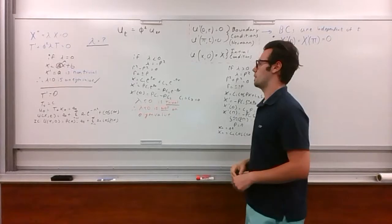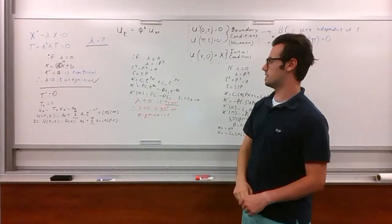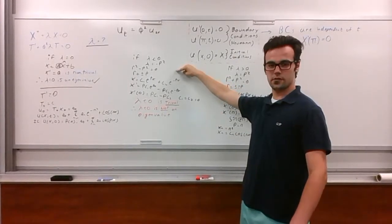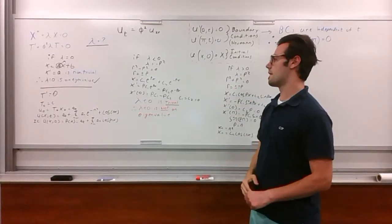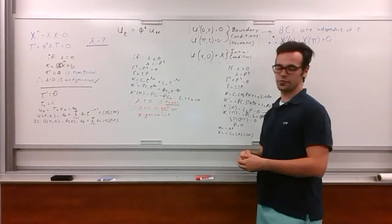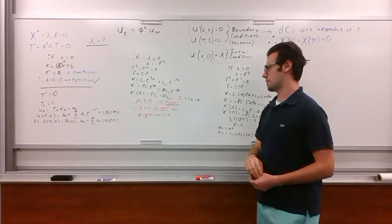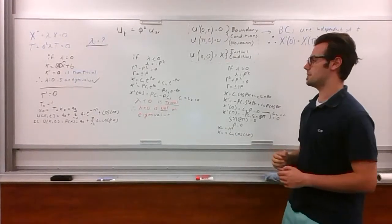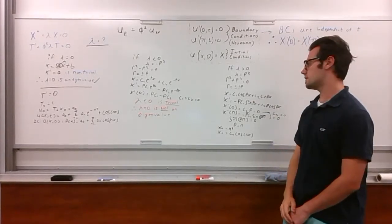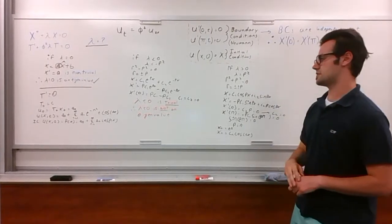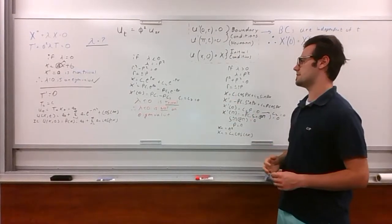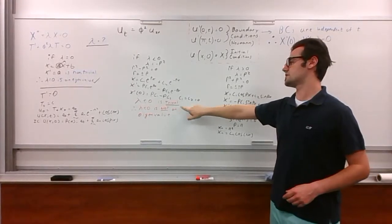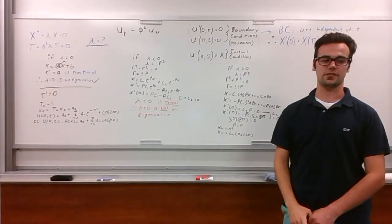Moving on to the next possible eigenvalue, we make the substitution that lambda is equal to negative p squared. Moving into our characteristic equation, we get r squared minus p squared equals zero, and r equals plus or minus p. From that, we solve for x and get that x is equivalent to c1 e to the px plus c2 e to the minus px. Taking the first derivative so we can apply our boundary conditions, we get x prime equals p c1 e to the px minus p c2 e to the minus px. Applying these conditions and solving, we prove that this is a trivial solution and that lambda less than 0 is not an eigenvalue.